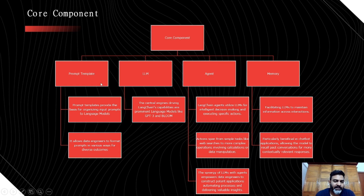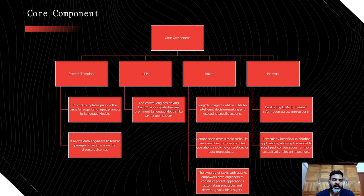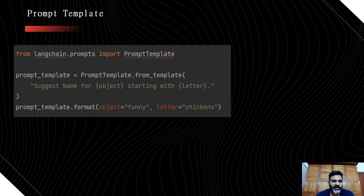Prompt template basically provides a kind of language model input to the LLM. If you have any question to ask, say ChatGPT, you are throwing some kind of string argument. Those string arguments can be formed as a template and then those templates can be passed on to your LLM model. Prompt template helps you dynamically design your prompt to get a response from the LLM.